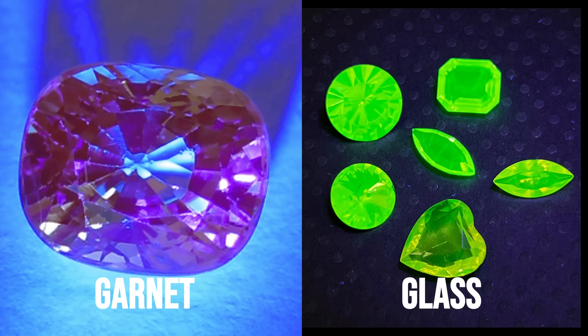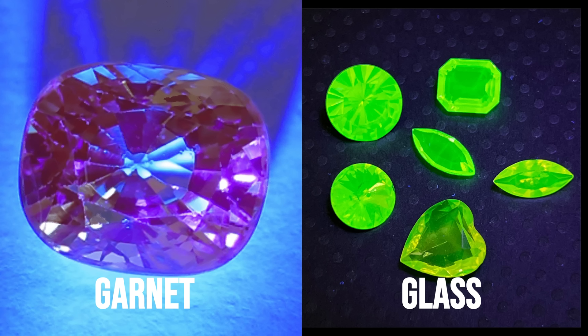Lastly, garnet is inert under shortwave ultraviolet light. It doesn't do anything, whereas glass has a chance to fluoresce pretty brightly. So if you hit a garnet top doublet with shortwave ultraviolet light, the glass half could glow, and the garnet half won't do anything.